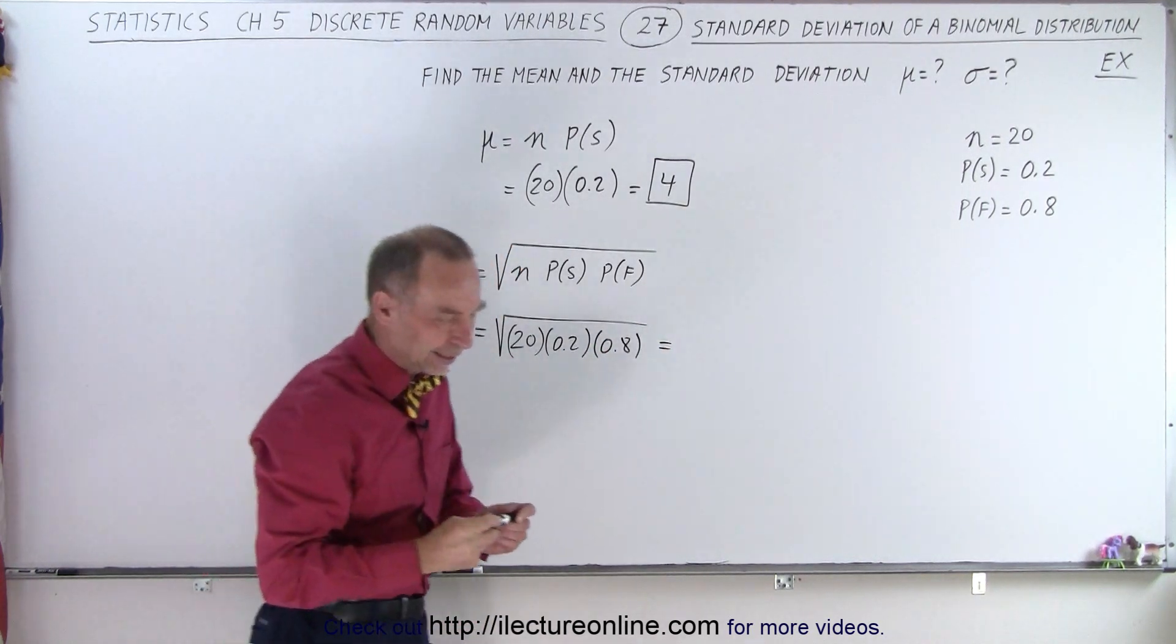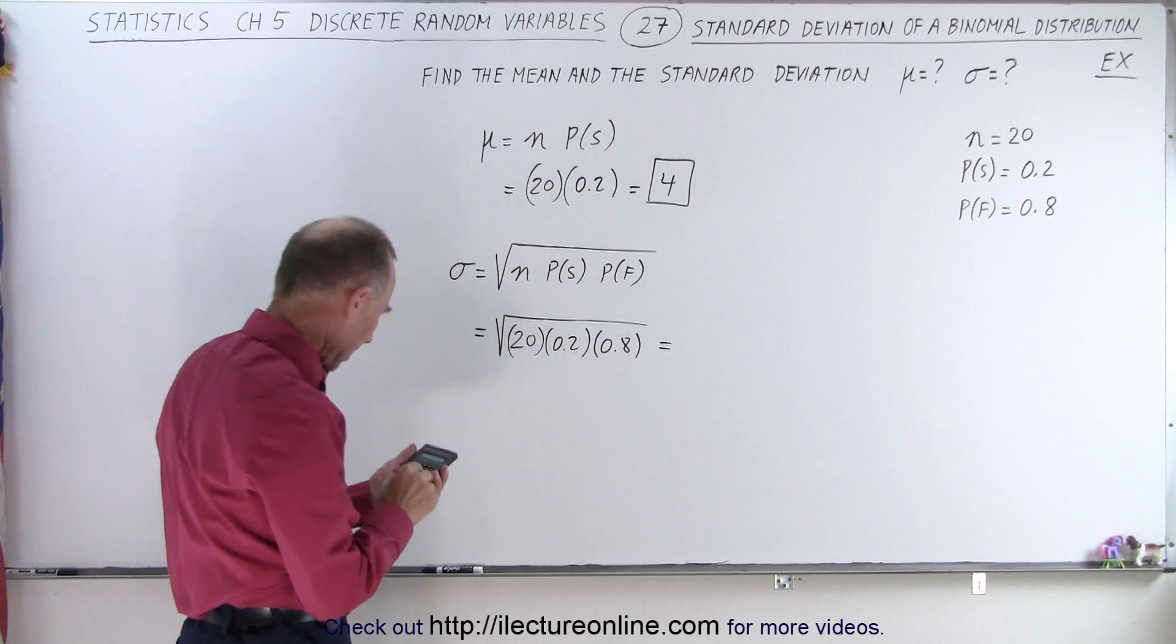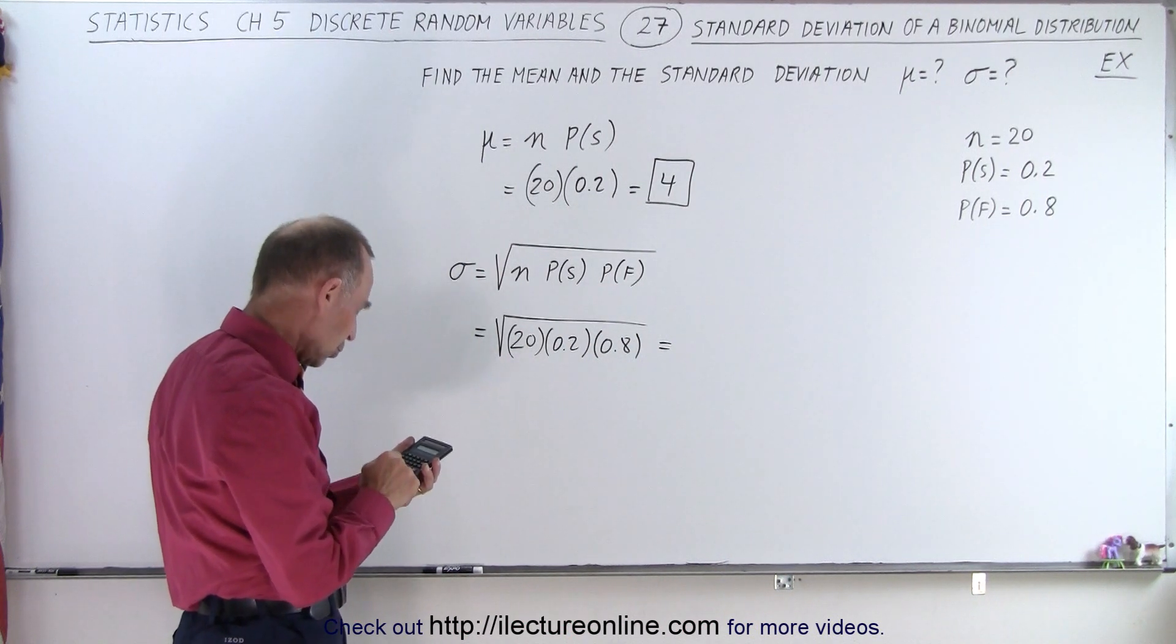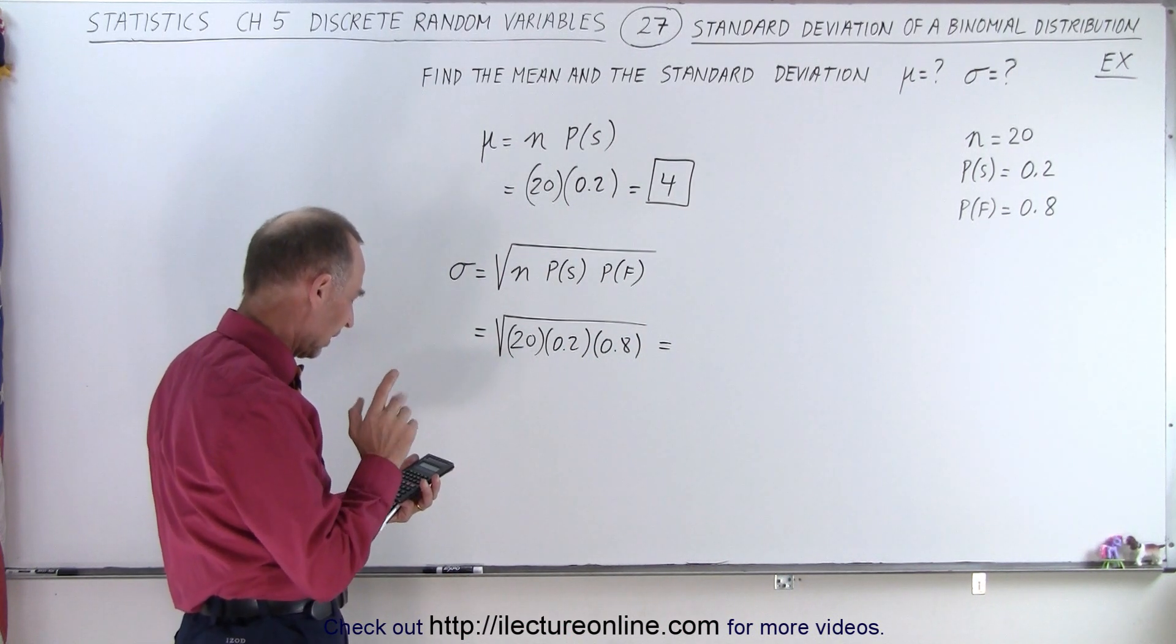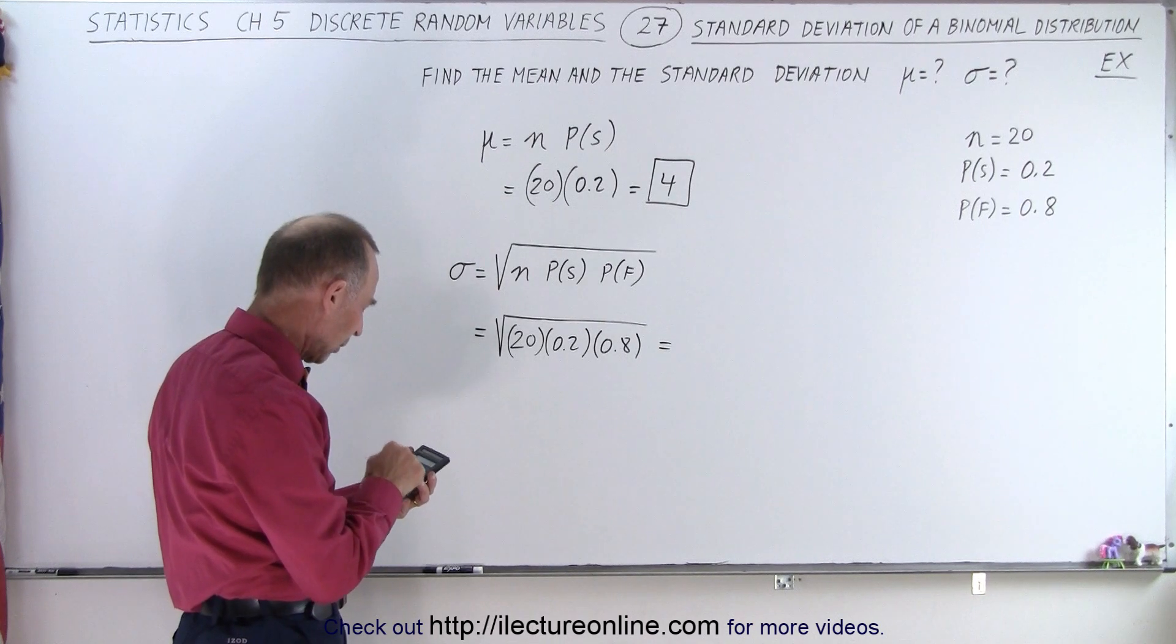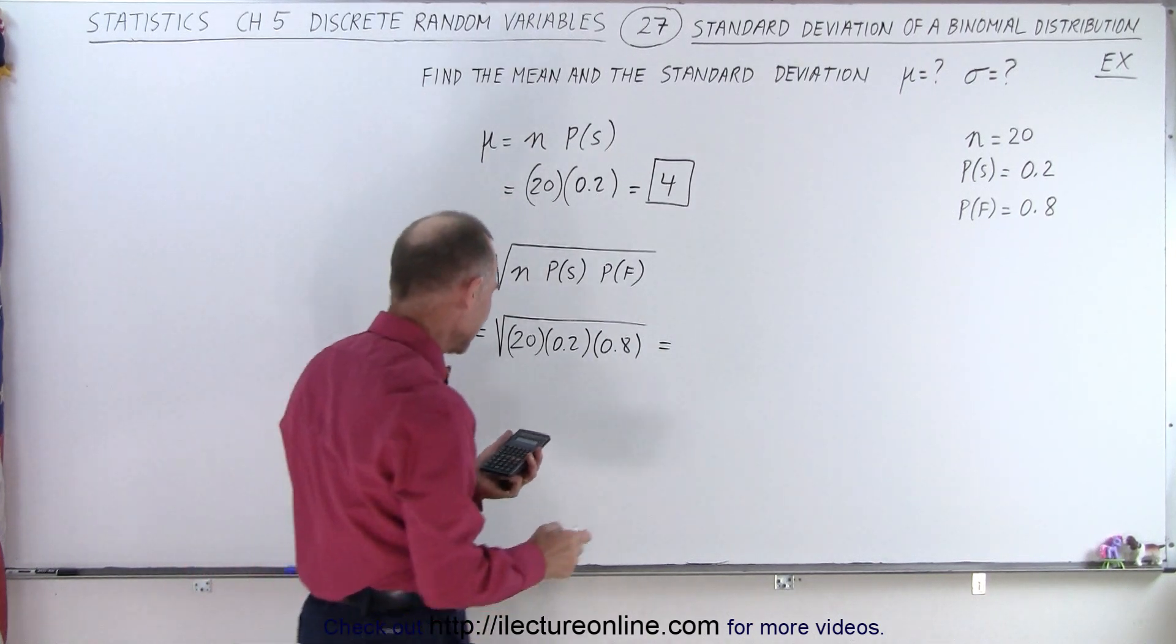So we have 20 times 0.2 times 0.8, that's 3.2. Take the square root of that, we get 1.789.